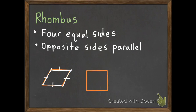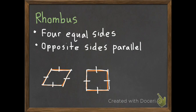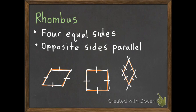Let's do one more example of a rhombus. This can be a rhombus as well, because we have four equal sides — all four sides are equal — and the opposite sides are parallel: the left and right are parallel, top and bottom are parallel. And one more: four equal sides — all those sides are equal — and the opposite sides are parallel. So those are all examples of a rhombus.